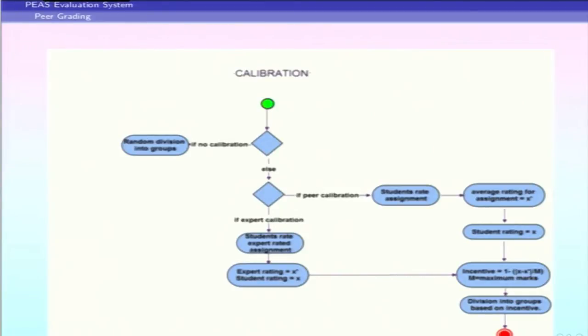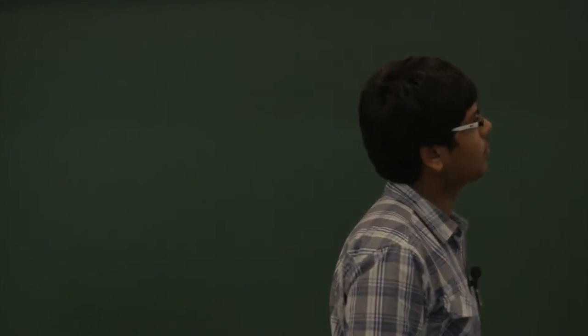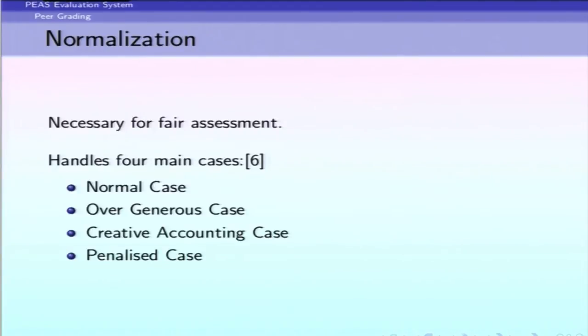Based on calibration, each assignment has a set number of peer graders. For instance, if an assignment has three peer graders and there are 300 students, we divide students into groups of 100 ordered by incentive score — the first 100 are the best evaluators, the second are medium, and the third are the worst. Each assignment is then sent to three different peers, one from each group, ensuring uniform grading. The system can also weight peers differently based on trust level.